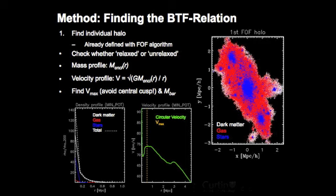Once I have my halos, I need to check whether they're relaxed or unrelaxed. If relaxed, the point of lowest potential in the halo coincides with the centre of mass. If unrelaxed, the halo is still merging with another halo or may not yet be virialized, so it can't be used in the Tully-Fisher relation. Once I have my relaxed halos, I need to find the mass profile of the galaxy. This plot shows the density profile of a halo — very dense in the centre and falling off quickly — with dark matter being the dominant component.